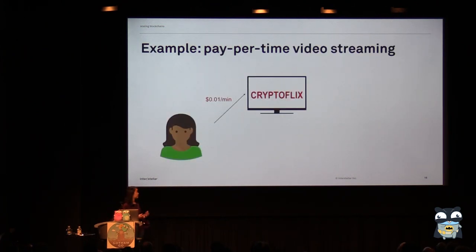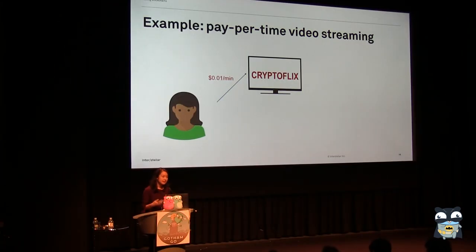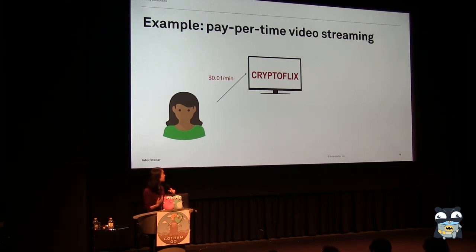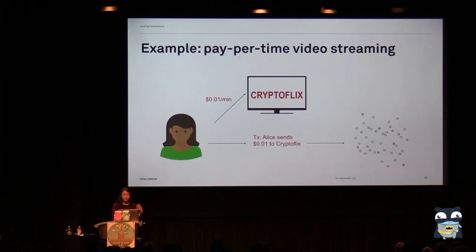So as an example, I could be starting a company called CryptoFlix — Netflix but with cryptocurrency. The way I make my money is that I charge people one cent per minute of content they watch on CryptoFlix. I got my first customer, Alice, and the way I've told her to give me my money is that every minute she's going to build a transaction to send one cent to CryptoFlix and submit that to the network.